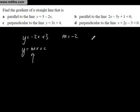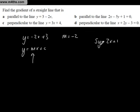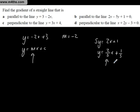Now let's rearrange another equation into the form y equals Mx plus C. Adding 5y to both sides gives 5y equals 2x plus 1. Dividing by 5, we get y equals 2 over 5 x plus 1 over 5. We can see the gradient is 2 fifths, and the y-intercept is 1 fifth.